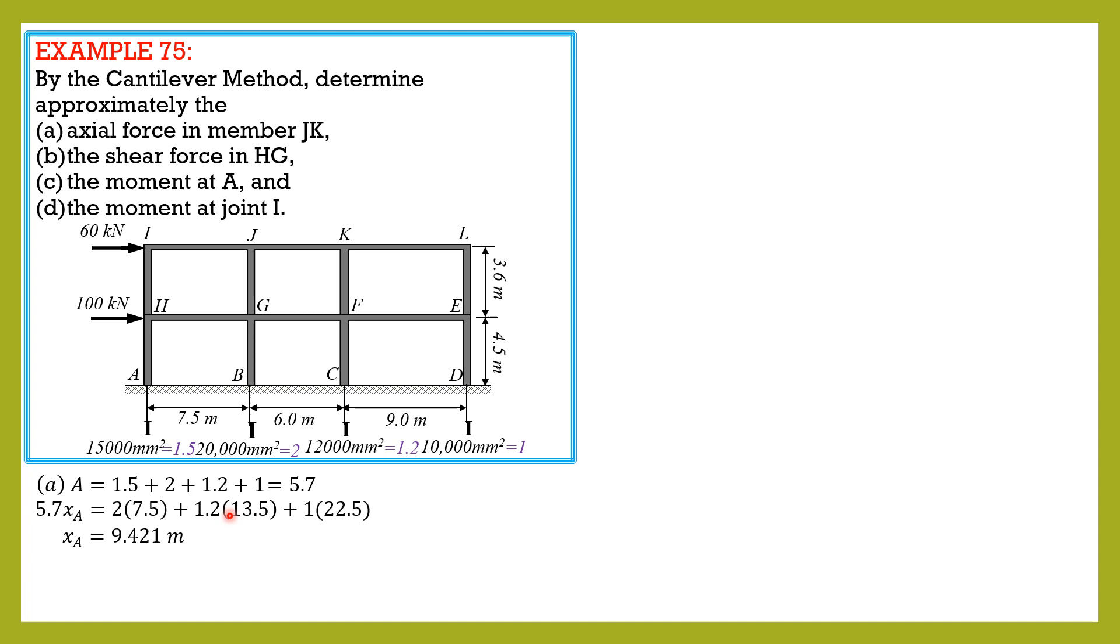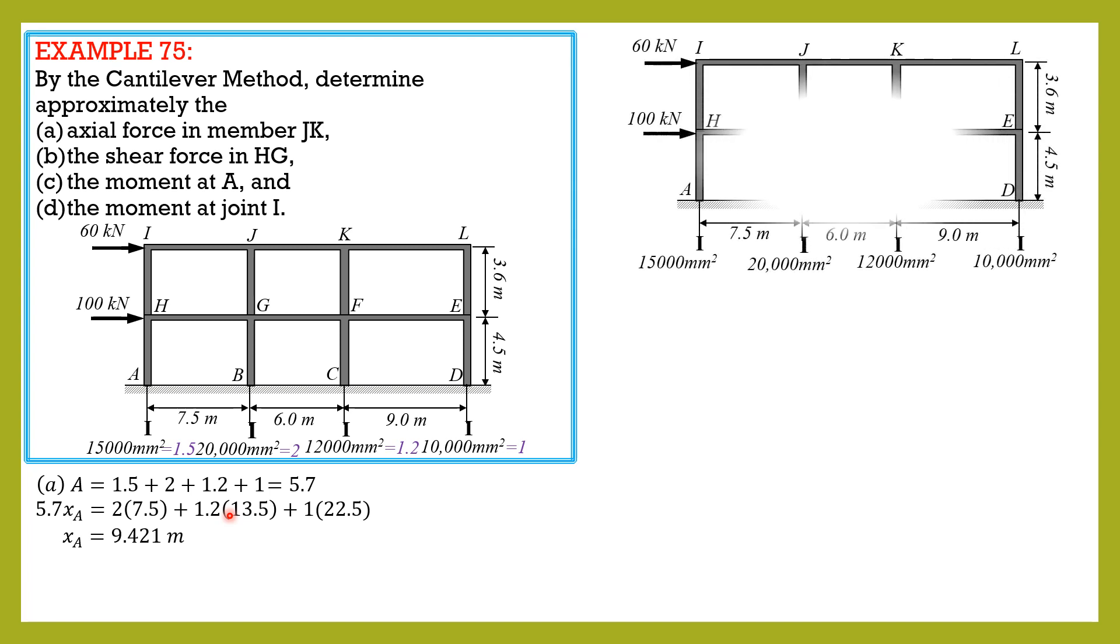So let's show that on the figure. So this is the neutral axis and this is xa. By the way, the columns have half of this distance is 1.8, half of this column height is 2.25, half of 4.5, half of 3.6. Then let's show xa 9.421 meters.